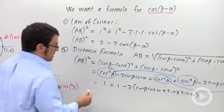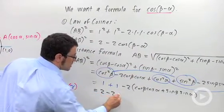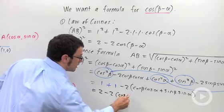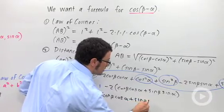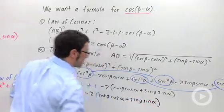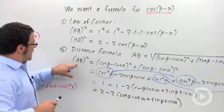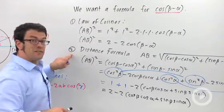So this is precisely 2 minus 2 cosine beta cosine alpha plus sine beta sine alpha. That's what AB squared equals from the distance formula.